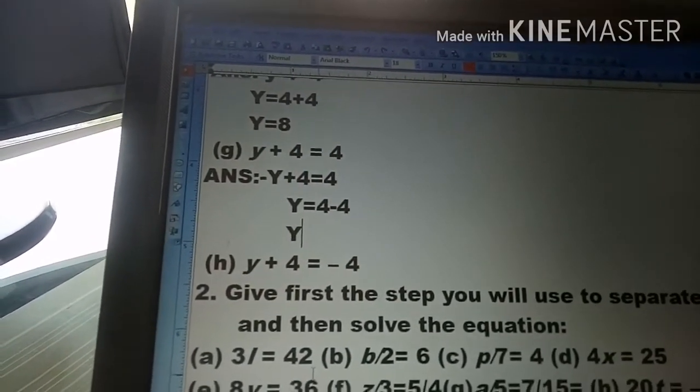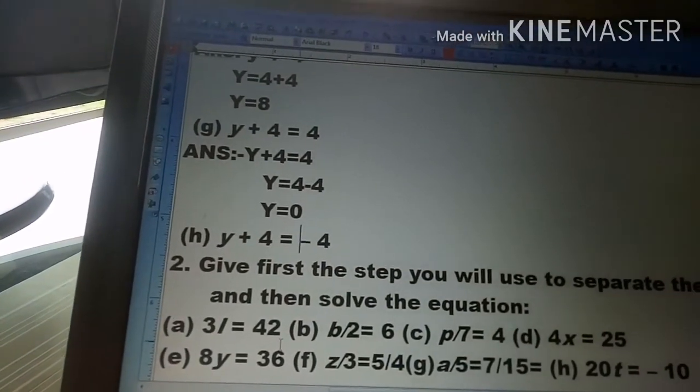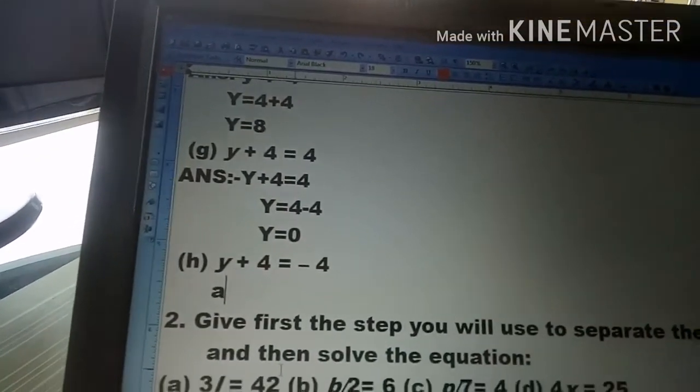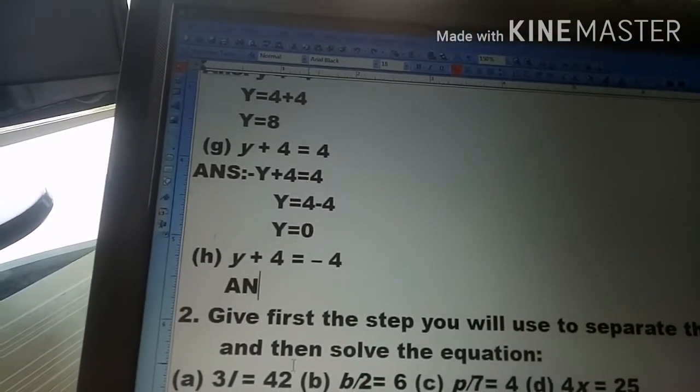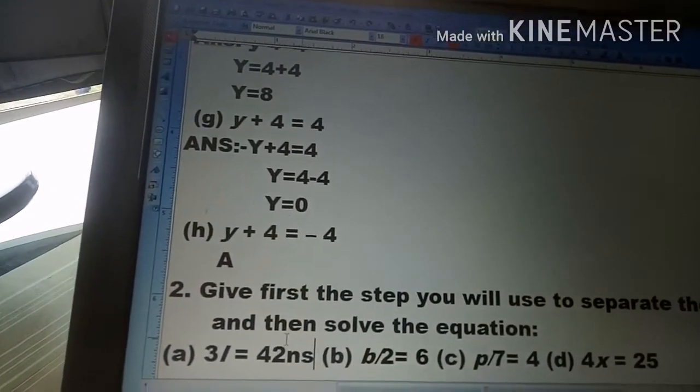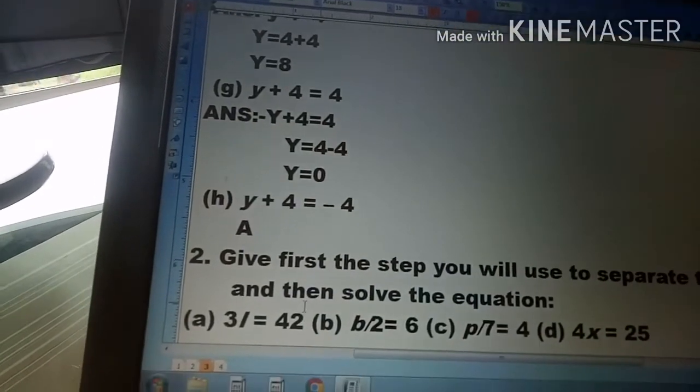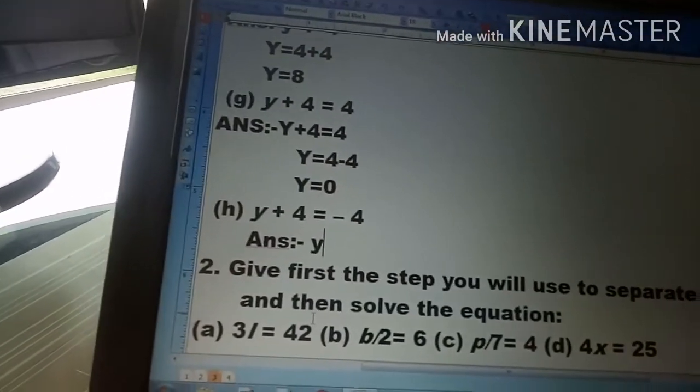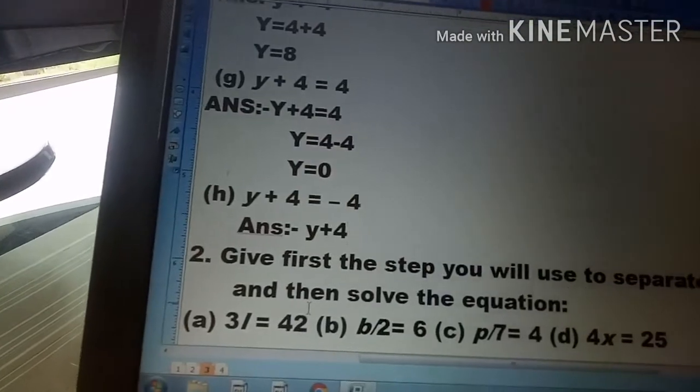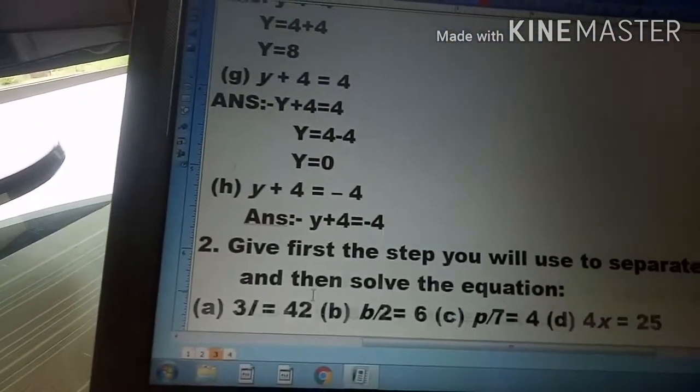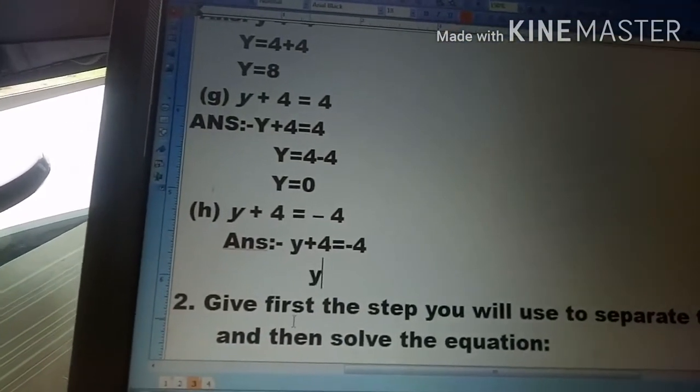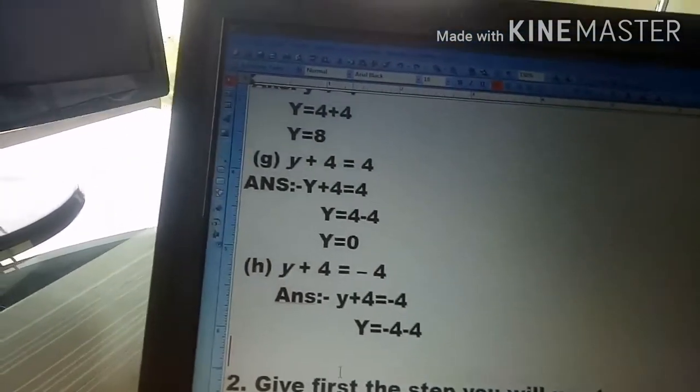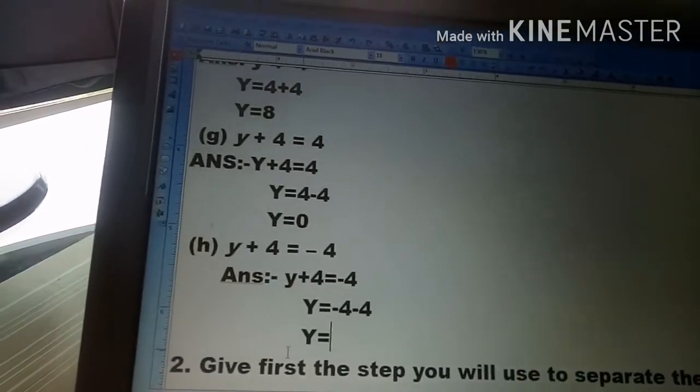The last question (h): y plus 4 is equal to minus 4. When plus 4 moves to the right side, it becomes minus 4. So y is equal to minus 4 minus 4, which equals minus 8.